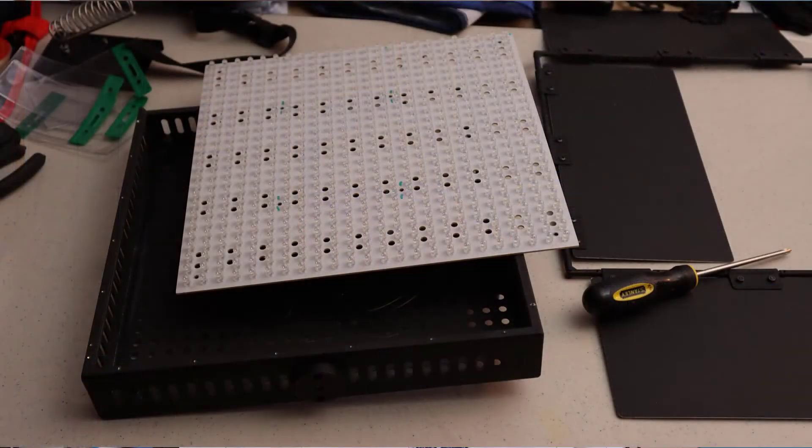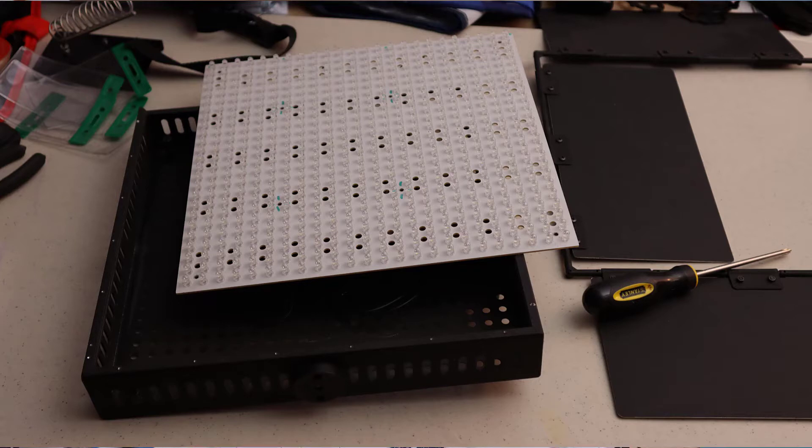So one of those switches is what went out. I would turn it and nothing would happen. So first let's take a look at what it looks like on the inside. The front panel comes off. It's pretty straightforward.